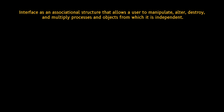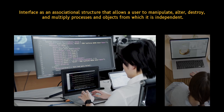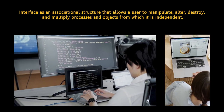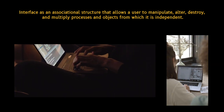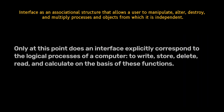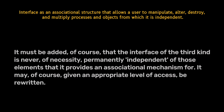The initial point of Fuller's explanation of the third type discusses how interfaces correspond to the logical processes of a computer. The idea here is that these interfaces are not permanently fixed — they can be rewritten or modified given the appropriate access level. This highlights the dynamic nature of interfaces and their potential for customization and evolution. Only at this point does an interface explicitly correspond to the logical processes of a computer — to write, store, delete, read, and calculate. The interface of the third kind is never permanently independent of those elements that it provides an associational mechanism for; it may, given an appropriate level of access, be rewritten.